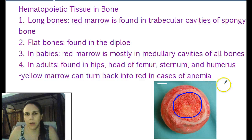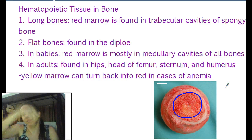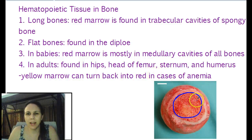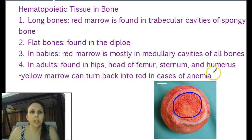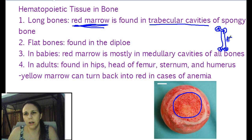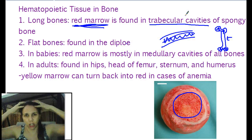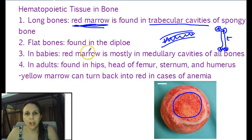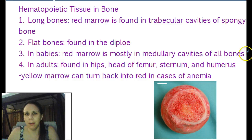Inside of the bone where we have the diploe or marrow, we do have hematopoietic tissues, which means blood-making tissues. In long bones, the red marrow which makes blood is found within the trabecular cavities of the spongy bone — in those spaces, not the main shaft. But in a flat bone, which is pretty much all spongy bone, we find it in the whole entire thing, so your whole skull is making blood. In babies, the red marrow is pretty much the whole inside of their bones, making red blood cells until about three months old.